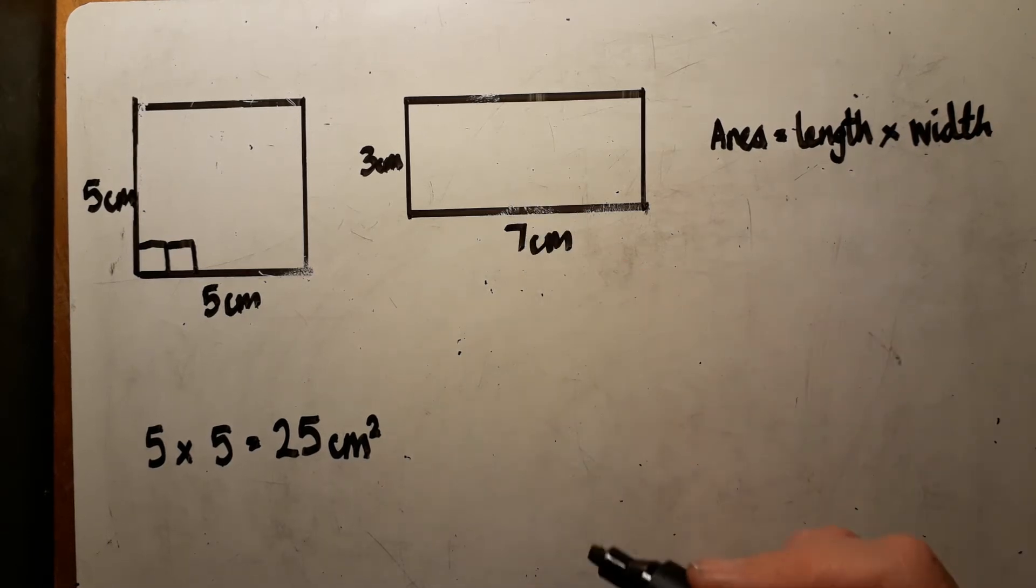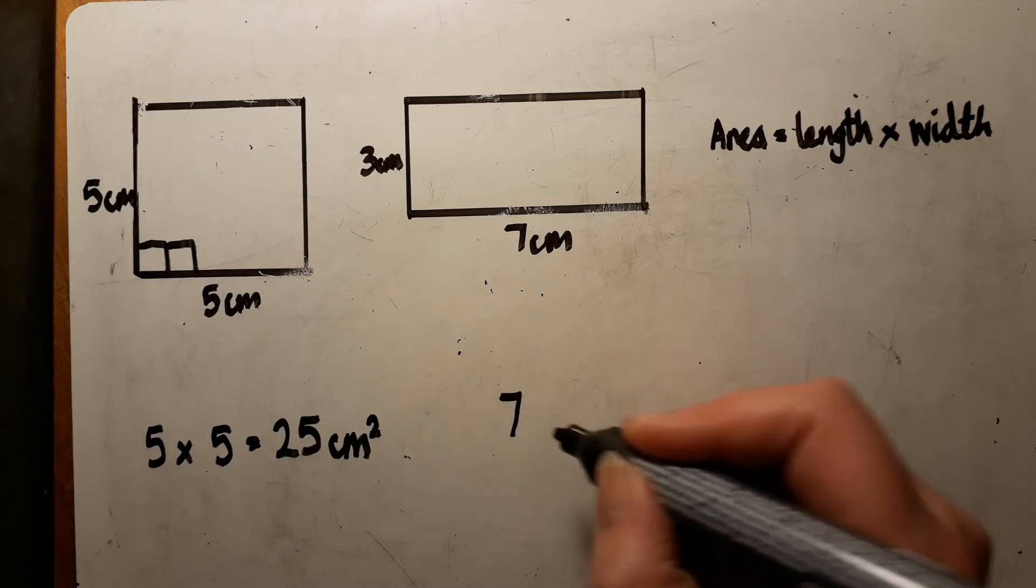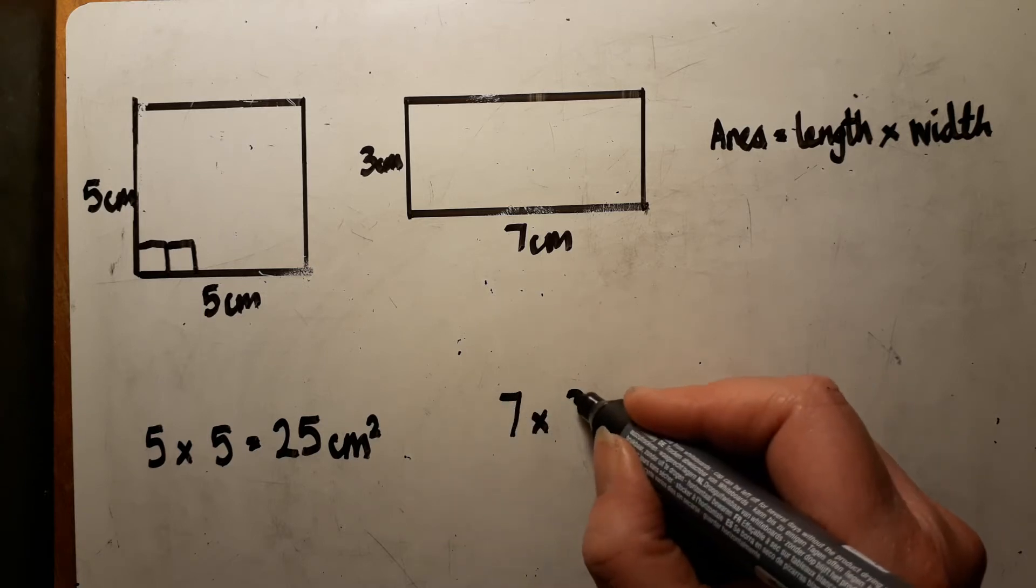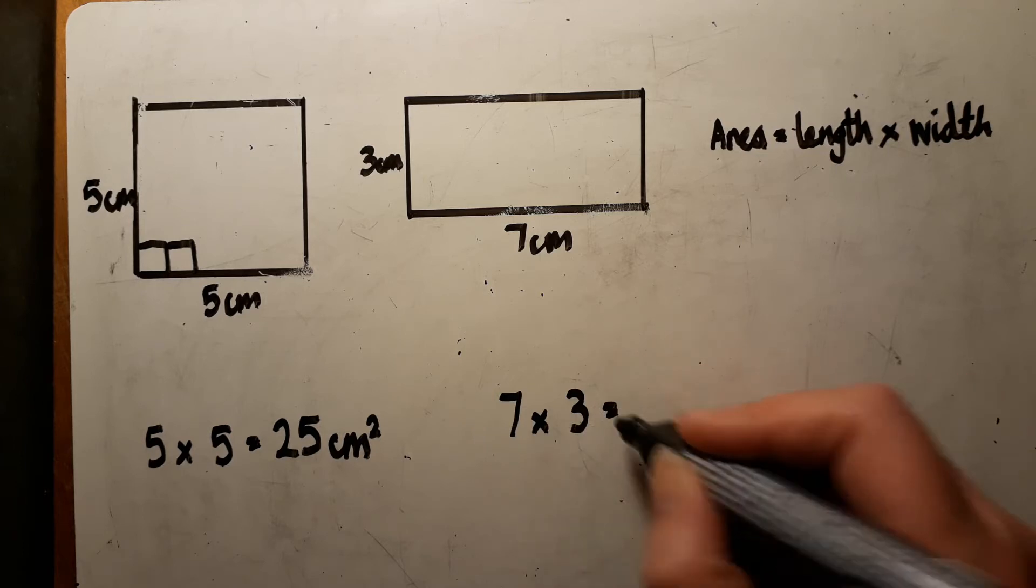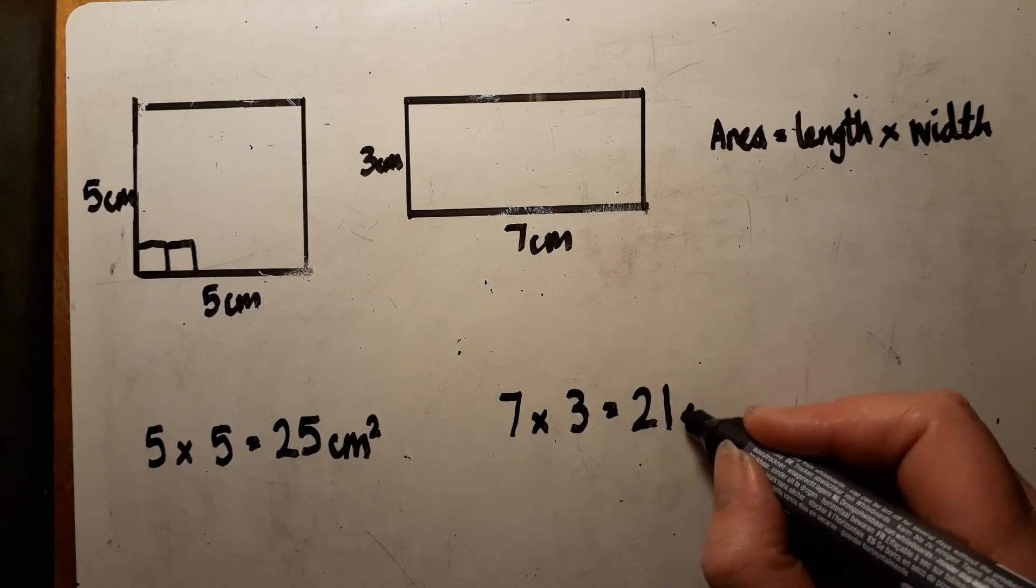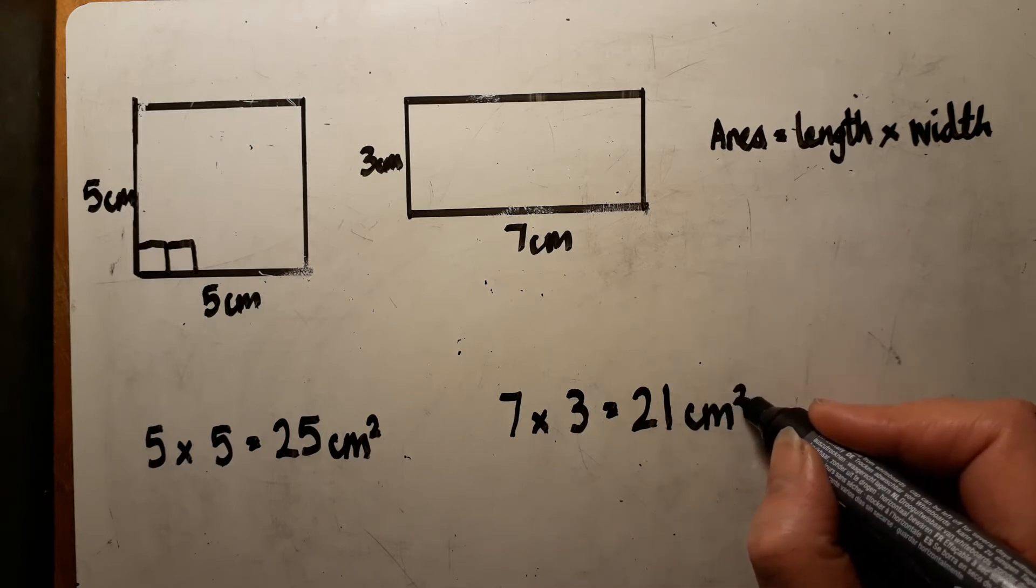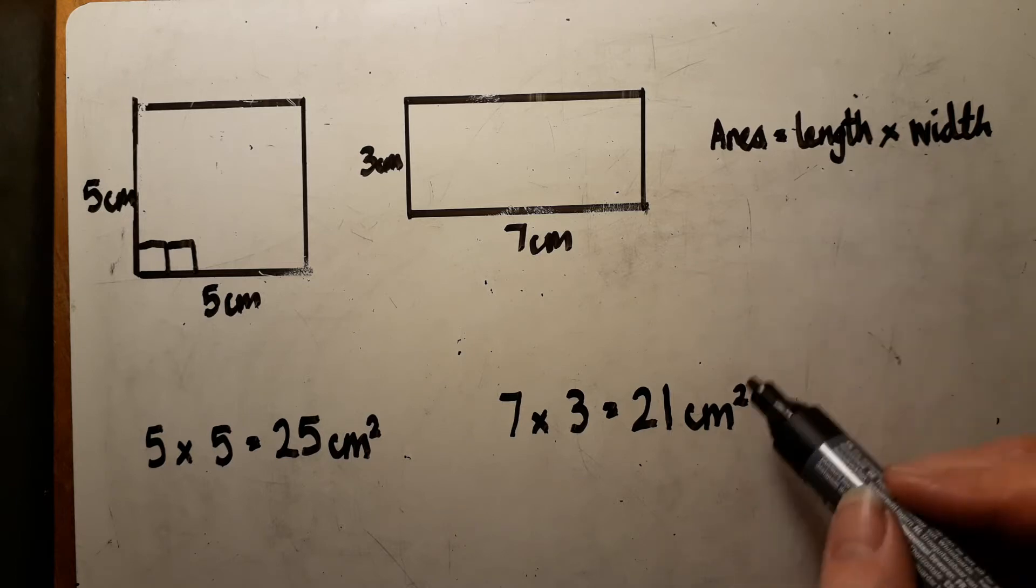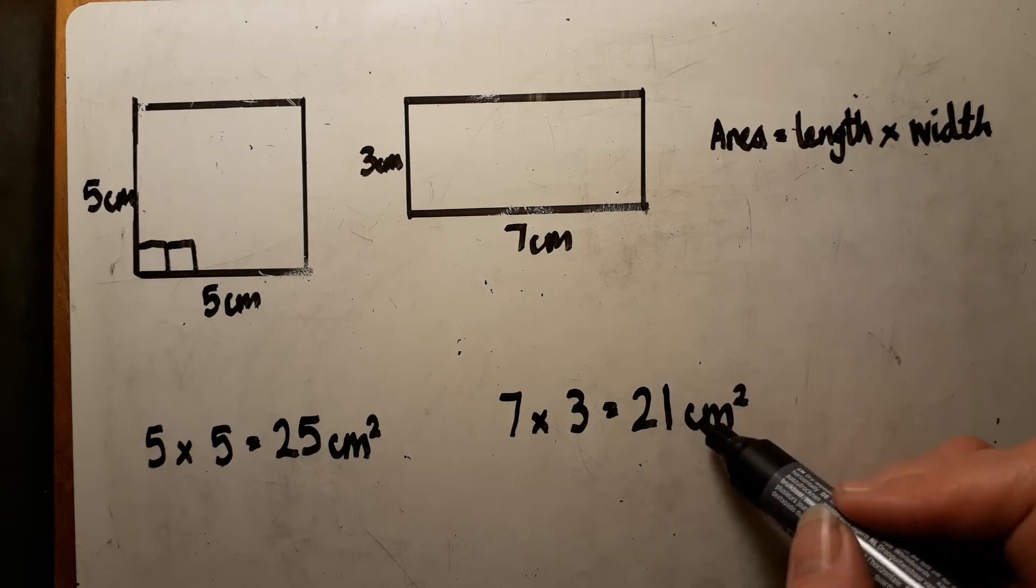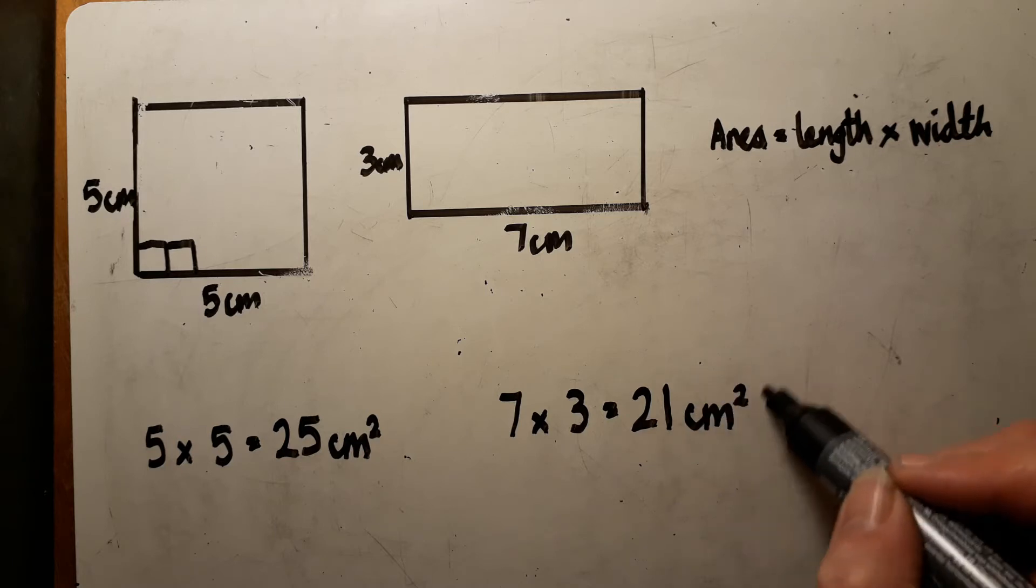So I'm going to do the same for the rectangle, so my length is 7 and I'm going to multiply by 3 which is going to give me 21 centimetres. But this is a measurement of area, so it's the length and the width, so 21 centimetres squared.